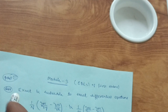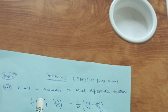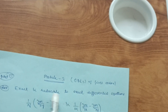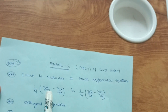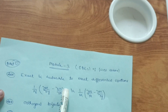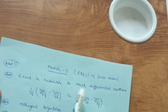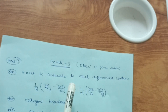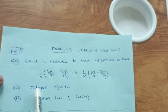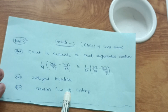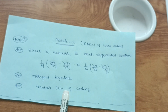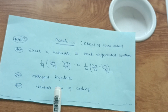Module 3 is ordinary differential equations of first order. Focus on Part 1 only — no need to cover Part 2, as the syllabus is vast and you are a backlog student. Exact and reducible-to-exact differential equations are a simple concept: differentiate M with respect to y and N with respect to x, then substitute the values to get the exact differential equation. Try 3 to 4 problems. Also try orthogonal trajectories and Newton's law of cooling — 3 to 4 problems from each — to easily cover Module 3.